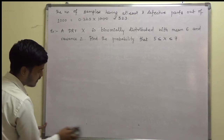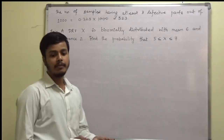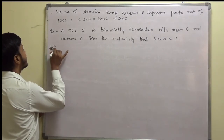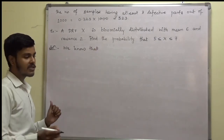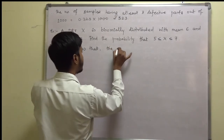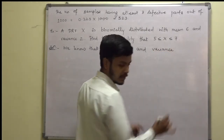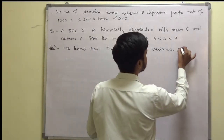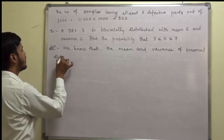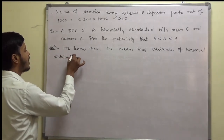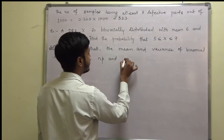The properties are: mean mu is equal to np, and variance is equal to npq. We know that the mean and variance of binomial distribution are: mean is np and variance is npq. Here mu equals np equals 6, and sigma squared equals npq equals 2.